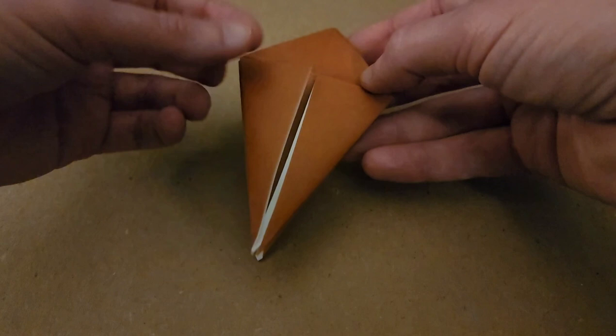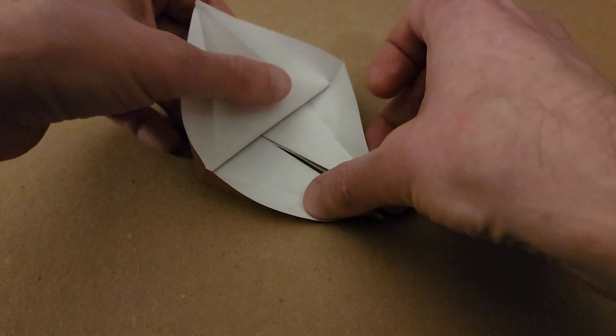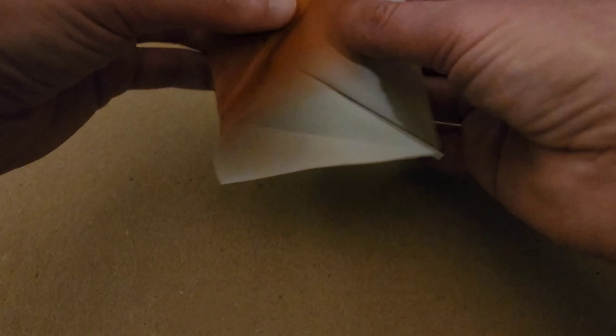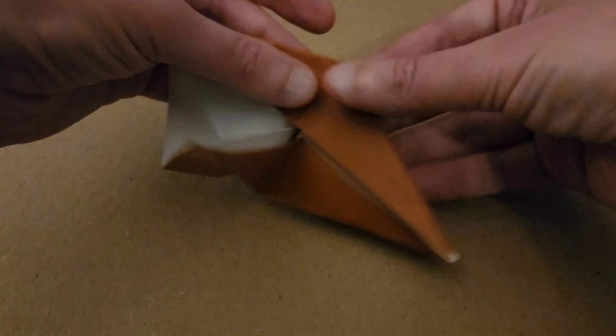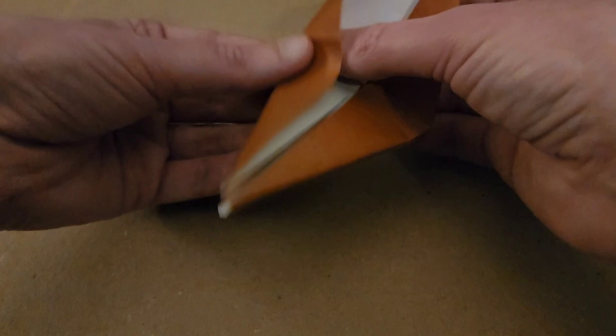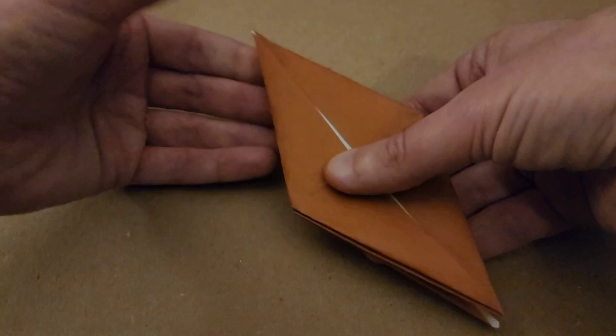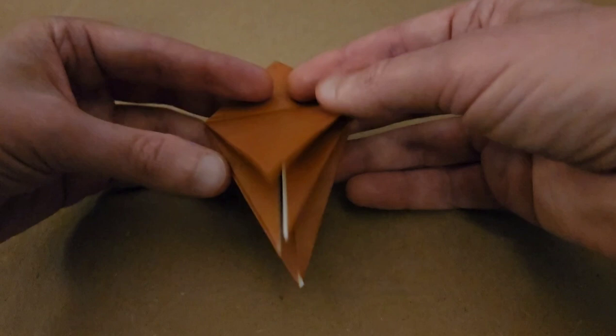Okay, then we do the same thing on the other side. Flip it over, open these flaps up, bring the top layer up. And start pinching down along those crease lines. There we go, and then bring that on down. So, whether it's the front side or the back side, looks exactly the same.